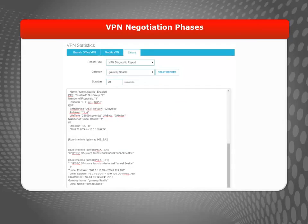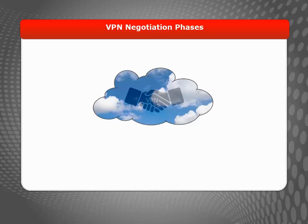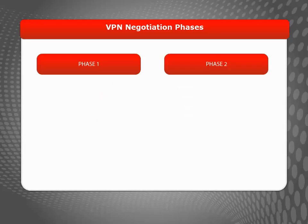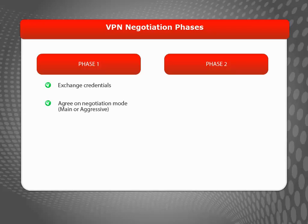Before I show you how to use the VPN Diagnostic Report, I'll review some basics about how VPN negotiations work. VPN negotiations happen in two phases, Phase 1 and Phase 2. During Phase 1, the two gateway endpoints exchange credentials, agree on the negotiation mode, and agree on Phase 1 security settings.